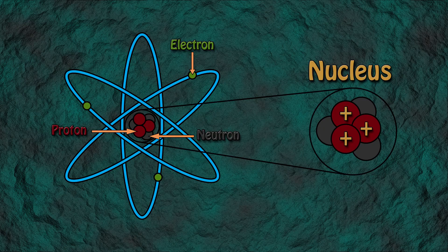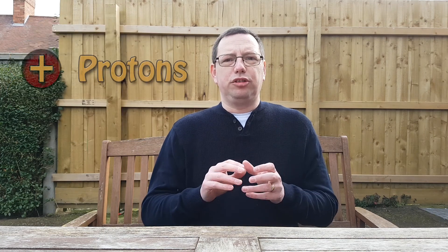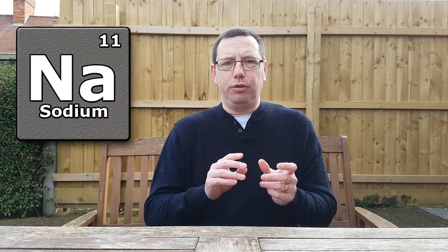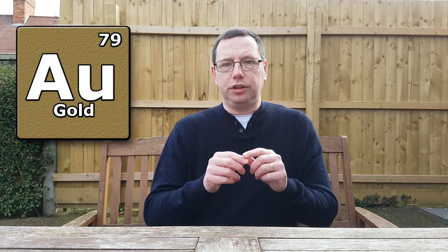The protons and neutrons are located in the centre of the atom, called the nucleus. The electrons move around the nucleus in a type of cloud that contains shells and orbitals. Protons are positively charged, and the number of protons that the element has determines which element it is. If it's got eight protons, it's oxygen. Eleven protons, sodium. Seventy-nine protons, it's gold.